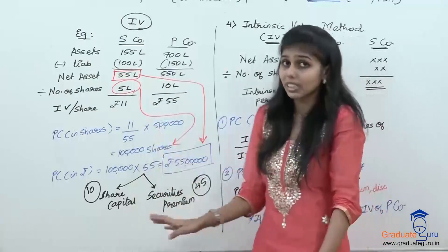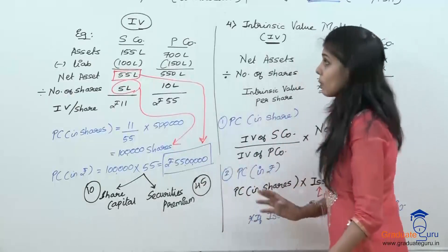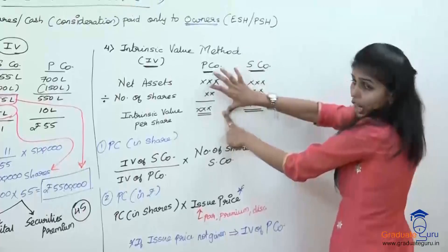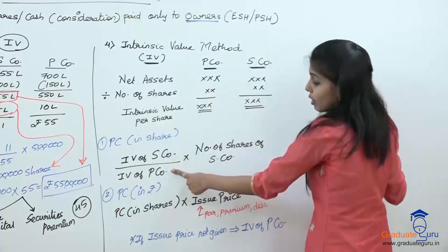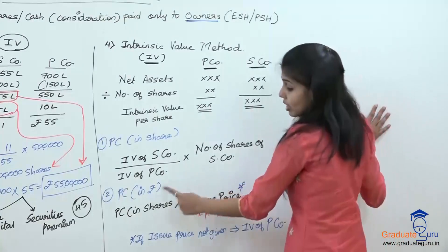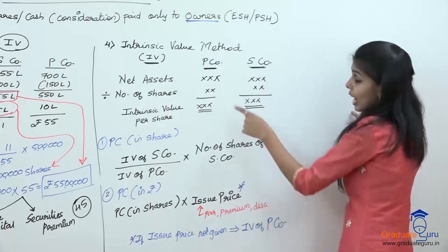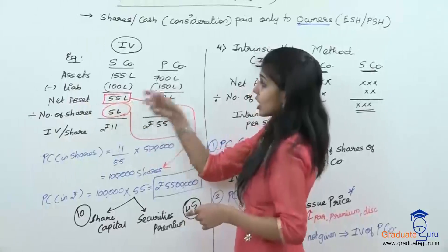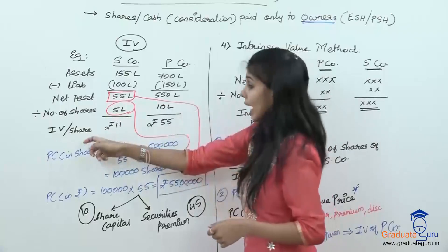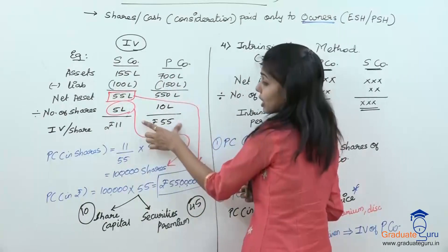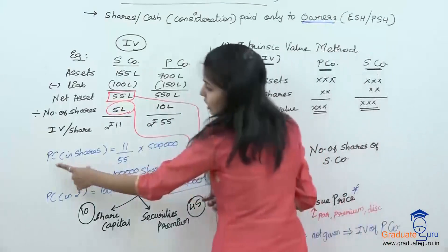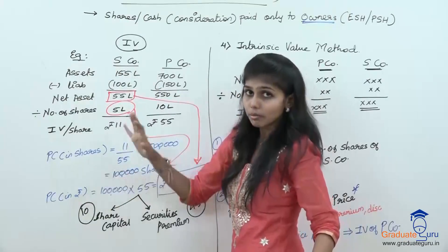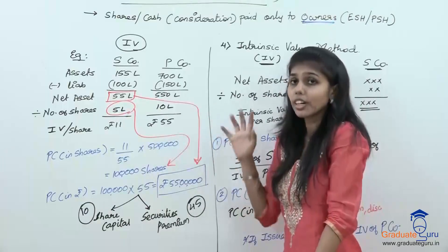Go step by step — shortcut — because PC is quite an important concept. Step one: look at intrinsic value — net assets divided by number of shares, that gives you IV per share. Step two: PC in form of shares = IV of selling divided by IV of purchasing, into number of shares of selling. PC in rupees = PC in shares into issue price. If issue price is not given, we consider IV of purchasing company as the issue price. In our example, net asset of selling company was 55 lakhs and purchasing company was 5 lakh 50 thousand; IV came to 11 and 55 respectively. PC in shares came to 1 lakh shares — so instead of 5 lakh shares, selling company shareholders are getting 1 lakh shares, but these 1 lakh shares are of intrinsic value rupees 55 per share.